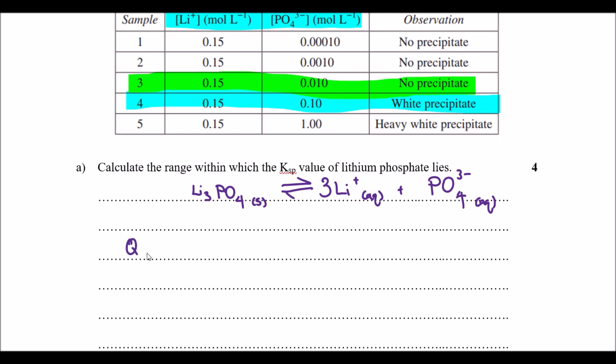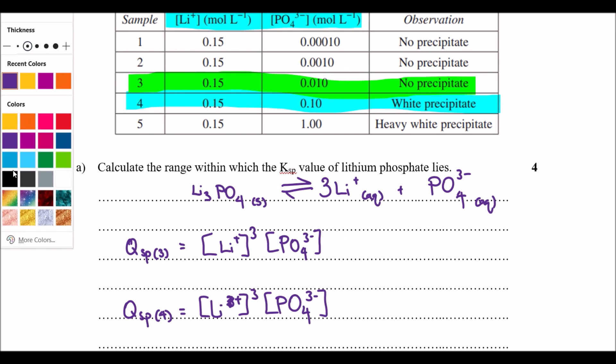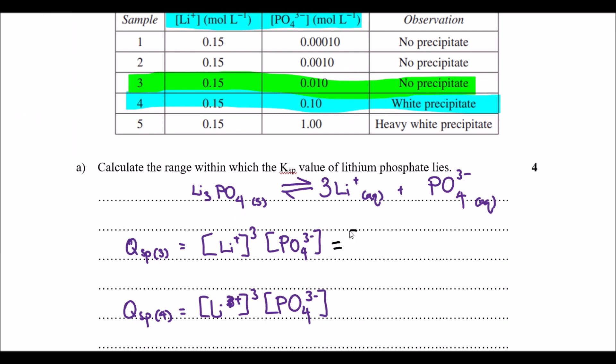The next bit is to write my equilibrium expression, so my Qsp of sample number three is going to be our two products here, my lithium and my phosphate. I'm also going to do the exact same one but for my sample number four. I'm going to substitute the two values into my relevant equation. For the first one lithium 0.15 to the power of three, phosphate 0.010.